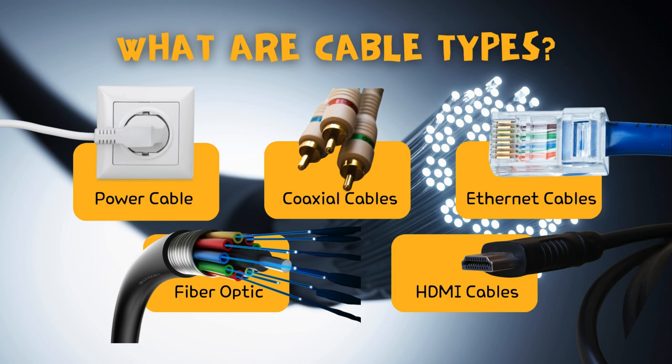5. HDMI cables. HDMI, high-definition multimedia interface, cables are used for transmitting high-definition audio and video signals between devices. These cables support uncompressed digital signals and are widely used in home theaters, gaming consoles, and audio-visual systems. HDMI cables come in different versions, such as HDMI 1.4 and HDMI 2.0, each offering different features and capabilities.